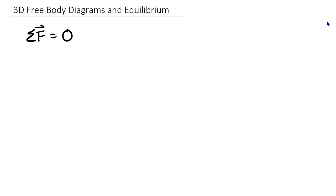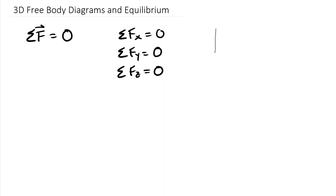Equilibrium involves summing forces and summing moments, so the sum of all forces equals zero, coming from Newton's second law where acceleration equals zero. Splitting that into three dimensions, we have sum of forces in x equals zero, sum of forces in y equals zero, and sum of forces in z equals zero. Keep in mind that x, y, and z are always part of our right-hand coordinate system where x crossed into y always has to be positive z.